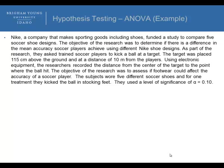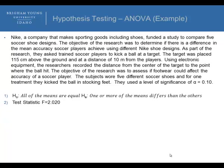Step number one is to state the null and alternative hypotheses. The null is that all of the means are equal. The alternative is one or more of the means differ than the other. Steps 2, 3, and 4 deal with the test statistic, the degrees of freedom, and the p-value.